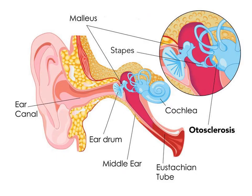This is a picture of the normal ear — the external ear, the middle and inner ear, and the bony labyrinth. As otosclerosis is a disease of the bony labyrinth, in otosclerosis the spongy bone replaces the normal bone in the stapes region, leading to stapes fixation and conductive deafness.